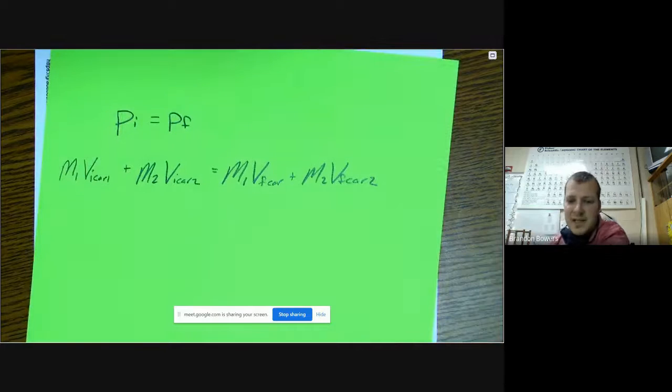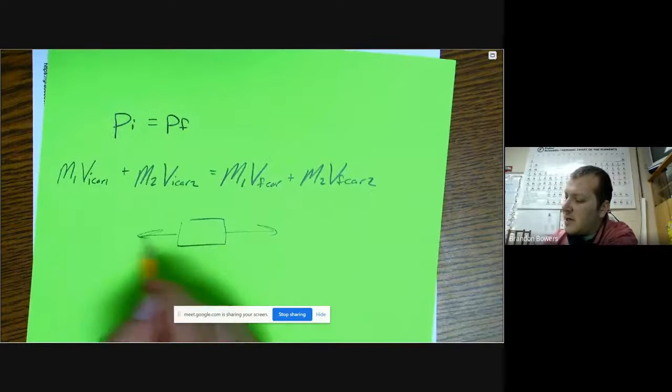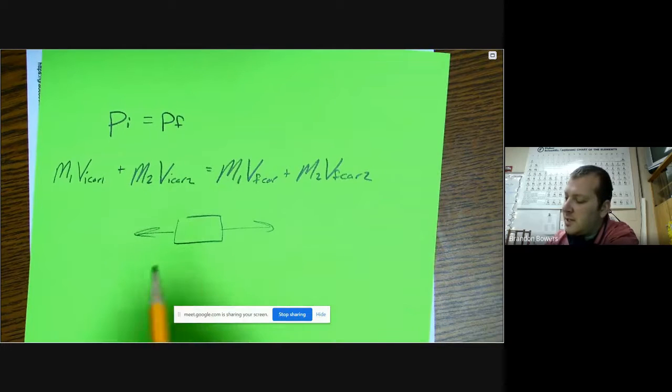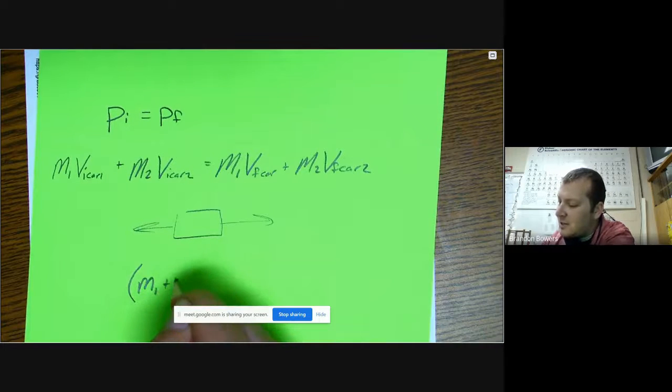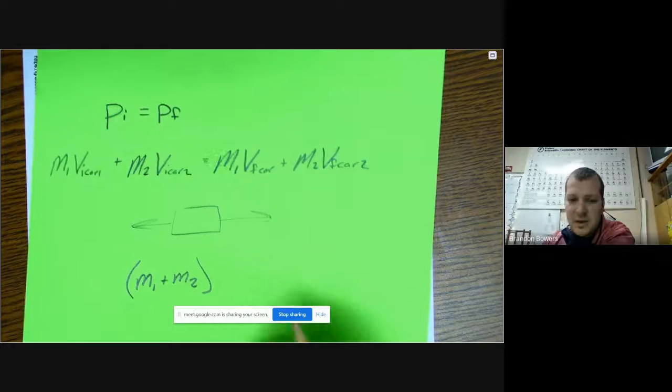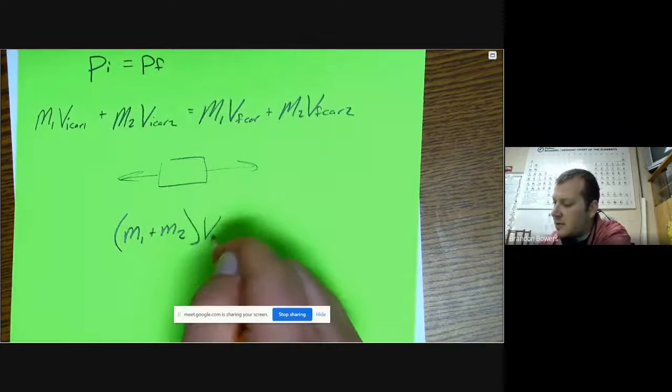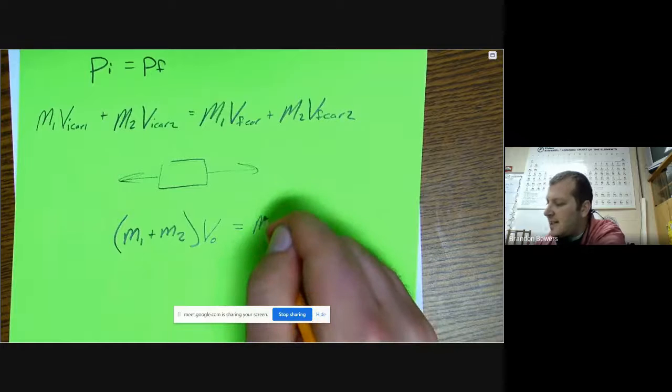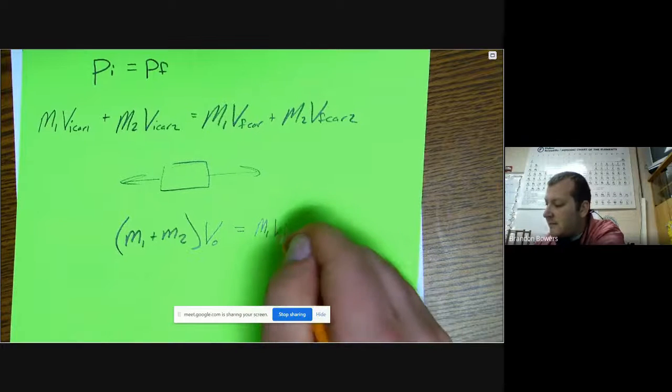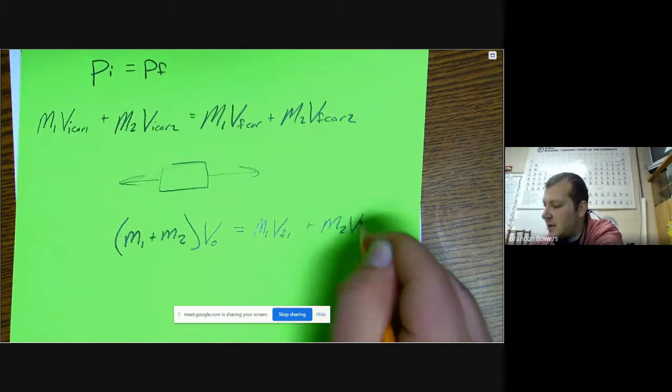So that's what we focused on yesterday. Now, in an explosion, what happens is you have one piece and they actually break apart and go in different directions. So the mass at the initial is combined. Now our equation, we're reforming it where all of our masses are combined into one with our initial velocity, and that equals the same thing: mass of object one times final velocity of object one, plus mass of object two times final velocity of object two.